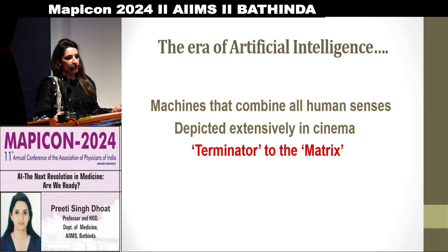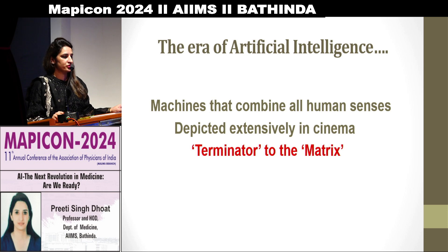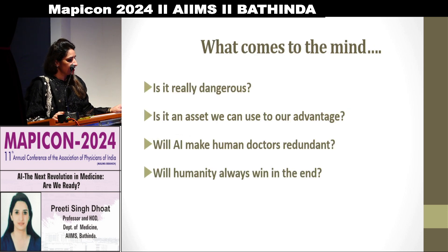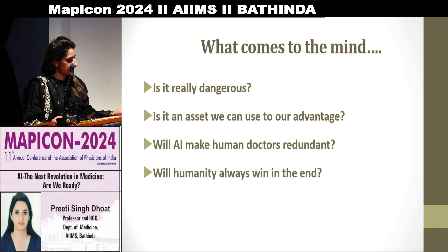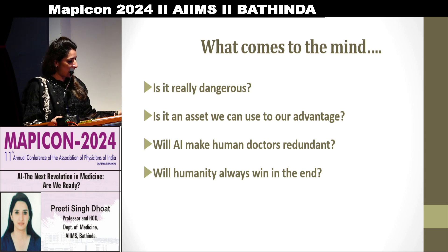The era of artificial intelligence — machines that combine all human senses — has been depicted extensively in cinemas, from Terminator to The Matrix. Now, what comes to our mind? Is it really dangerous? Is it an asset which we can use to our advantage? Will AI make human doctors redundant? And will humanity always win in the end?